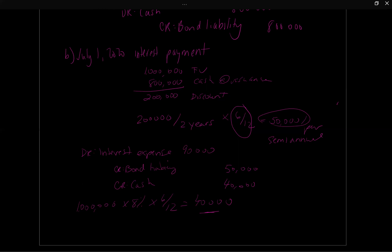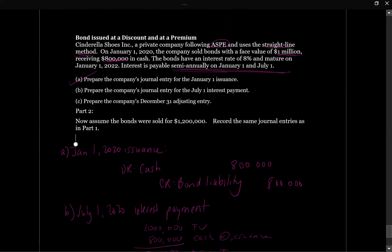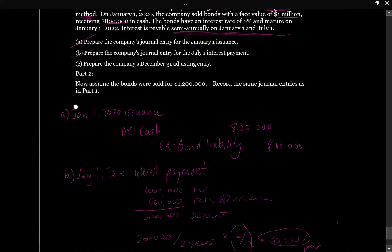With a discount, we recognize a higher interest expense on the income statement. The bondholders only receive $40,000 twice a year in cash, but we also recognize the implicit cost of increasing the bond liability, resulting in $90,000 of interest expense. By contrast, a premium would decrease the amount going through the income statement because the bonds cost the issuer less overall — the company received more upfront than it will repay.